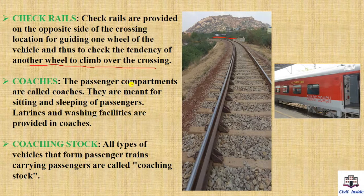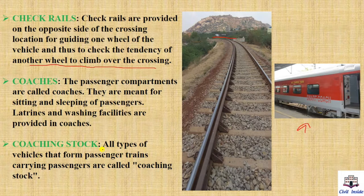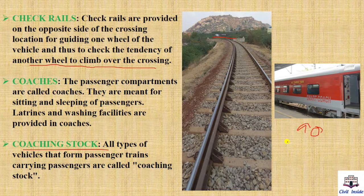Coaches: the passenger compartments are called coaches. They are meant for seating and sleeping of passengers, and washing facilities are provided in coaches — these are what we commonly call the train compartments. Coaching stock: all types of vehicles that form passenger trains carrying passengers are called coaching stock.